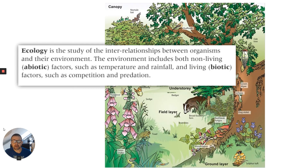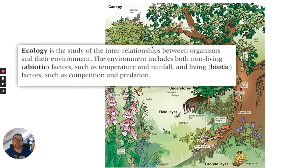First of all, ecology is the study of the interrelationships between organisms and their environment. The environment includes both non-living abiotic factors such as temperature and rainfall, and living biotic factors such as competition and predation. I'm going to use the example of a very diverse woodland to talk about all the individual interrelationships that are going on.